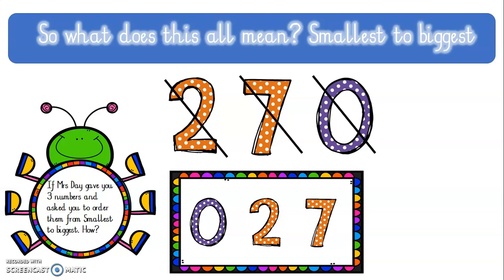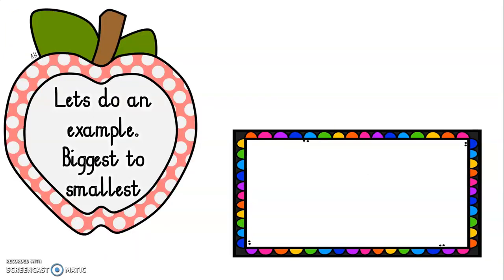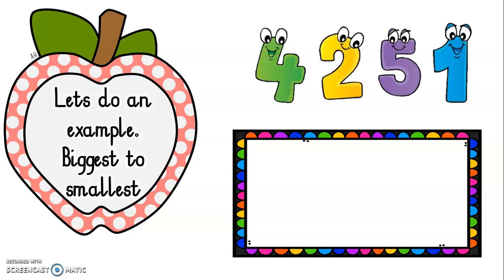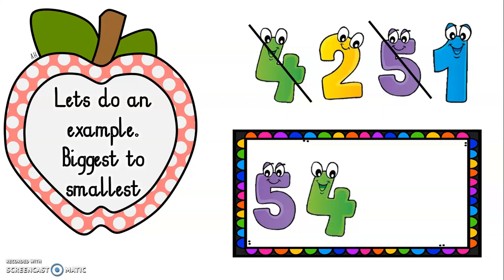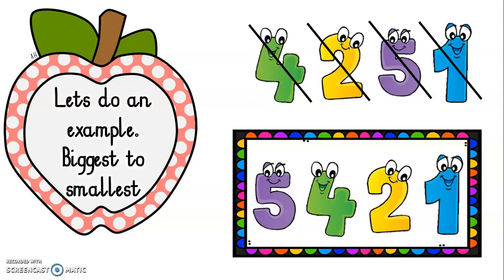Now we are going to move on to number sets of 4. Let's do an example from biggest to smallest. Here we have 4 numbers: 4, 2, 5, and 1. We need to order them from the biggest to the smallest. I want you to pause your video now and do this on your own. The first number we have is 5 — that is the biggest number. The next biggest number is 4, then 2, and the last number would be 1. After we used each number, we scratched each one out.